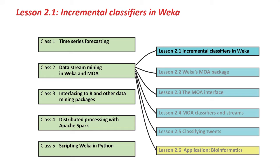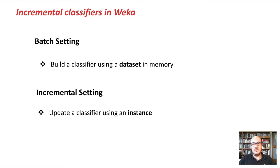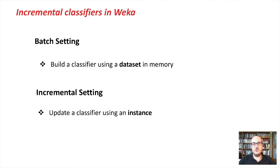Let's start with the first lesson: incremental classifiers in Weka. In Weka, usually what we do is store all the data set in memory and then build our classifier using that stored data set. This is what is called the batch setting. In the incremental setting, what we do is update our classifier one instance at a time. There is a huge difference between the two settings.